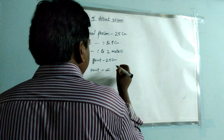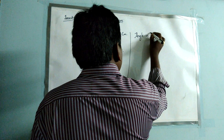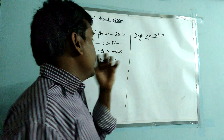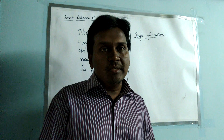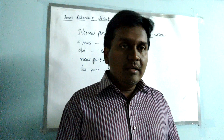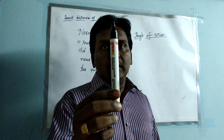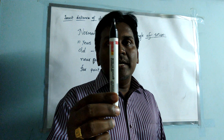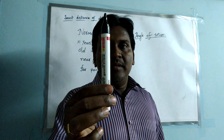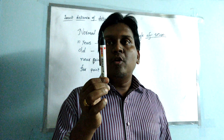Next we have the angle of vision. Since the near point is 25 centimeters, a person also has a certain angle to see an object. For example, consider this pen — at any moment if I am able to see the top point and the bottom point of the pen. When I place the pen close to my eye, am I able to see the top and bottom of the pen?